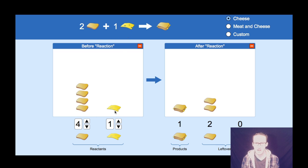But as I look at the amounts that I'm starting with here, four slices of bread and one piece of cheese, I can only make one sandwich, even though I have enough bread to make two sandwiches.